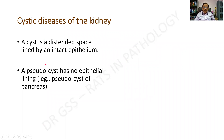What is the definition of a cyst? A cyst is a distended space that is lined by an intact epithelium, whereas a pseudocyst has got no definite epithelial lining. Pseudocysts are more common in the region of the pancreas.